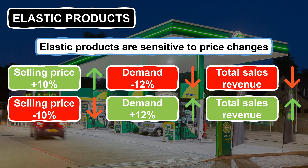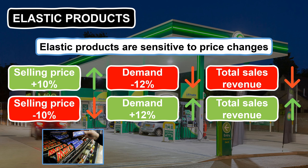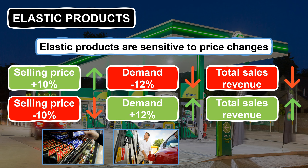Examples of products with elastic demand include chocolate bars, because customers have so much choice in the market and often little loyalty to a specific chocolate bar. Therefore, if a brand decided to increase the price of a particular chocolate bar — say a Mars bar or a Snickers — it's very likely that a higher percentage of customers would buy a competitor's chocolate bar instead. Petrol at individual stations is also price elastic, as there are many alternative options, and if a competitor is selling petrol for 10% cheaper locally, it's likely that many customers will switch.